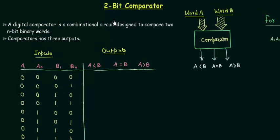In this presentation we will study the 2-bit comparator. On the right hand side of your screen you can see a comparator with two inputs. I have shown the inputs by thick arrows because we can have n-bit binary words as the input.